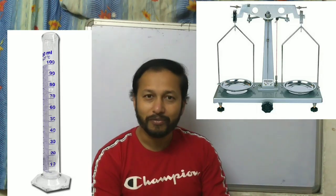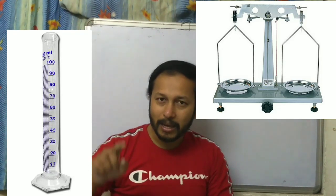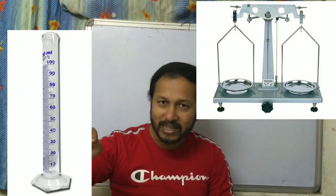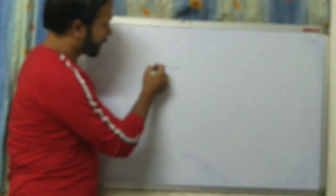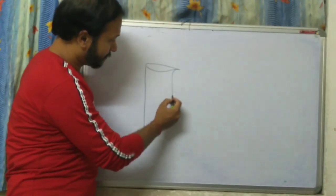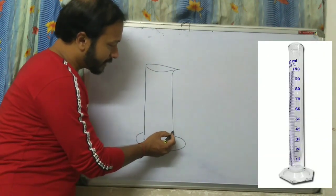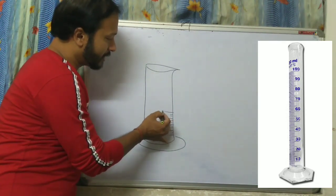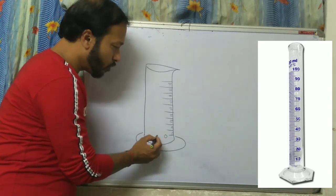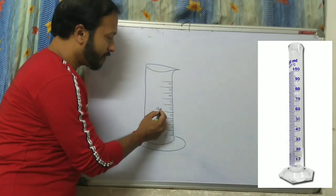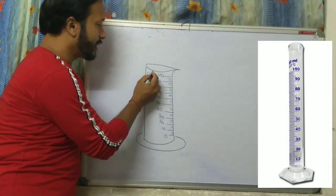First we use the physical balance to find the mass of the solid. Then we take the measuring cylinder. In the measuring cylinder we see different marks: 0, 10, 20, 30, 40, 50, 60, 70, 80, 90, 100 centimeter cube.